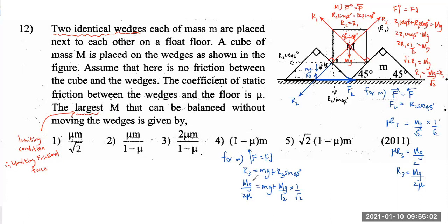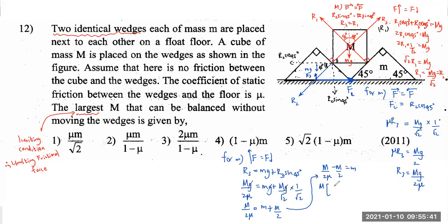Since g is common, it cancels out. We're left with: M/(2μ) = m + M/2. Taking all capital M terms to one side: M/(2μ) − M/2 = m. Factoring out M: M · (1/(2μ) − 1/2) = m. Taking 2μ as the common denominator: M · (1 − μ)/(2μ) = m.